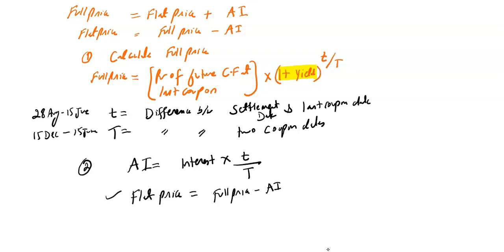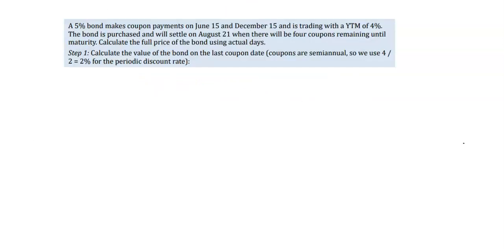Let's learn this concept with an example. We have a 5% bond that makes coupon payments on 15th June and 15th December, and it is trading with a yield-to-maturity of 4%. The bond is purchased and will settle on 21st August, with four coupons remaining until maturity. So: 15th June 2022, 15th December 2022, settlement on 21st August 2022, and maturity in 2024.